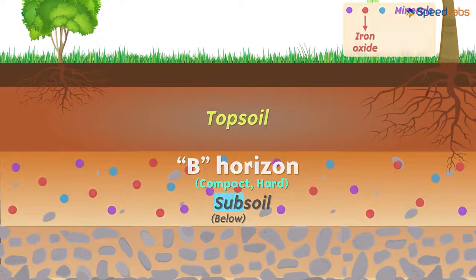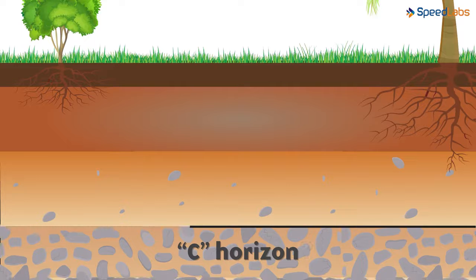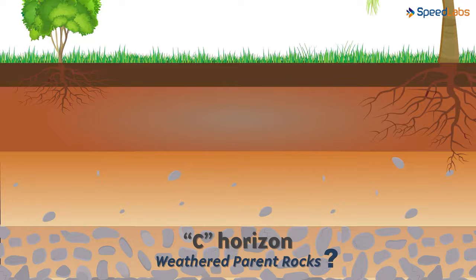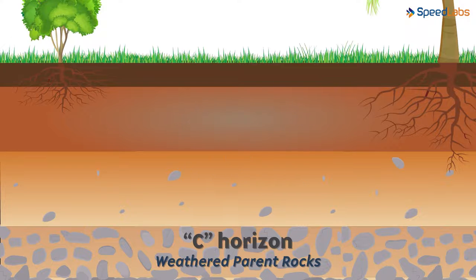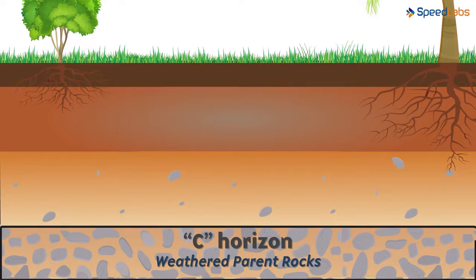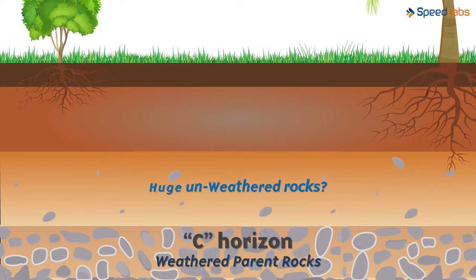What comes after the B region? It's the C horizon. Can you notice the presence of these cracked rocks? This region has weathered parent rocks. Weathering is simply the process by which huge rocks break down into smaller pieces, further giving rise to the formation of soil. This C horizon has weathered parent rocks — rocks that are cracked and which will crack further for the formation of soil. The unweathered rocks are located below this layer.